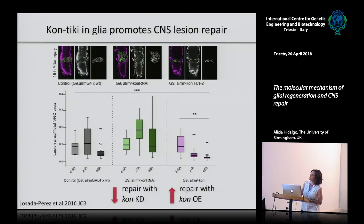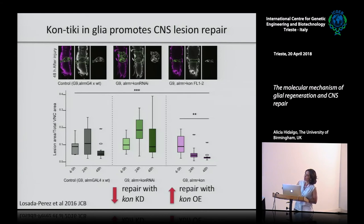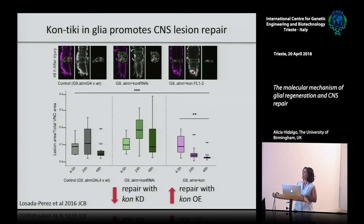Maria looked at the progression of injury in Contiki loss and gain of function conditions. In the normal profile, the injury expands and then shrinks. When you knock down Contiki with RNAi, the injury expands and doesn't quite shrink. When you overexpress Contiki, the injury does not expand and shrinks remarkably - very similar to what we saw with Notch.